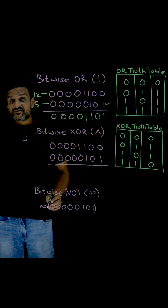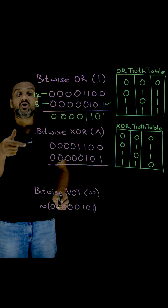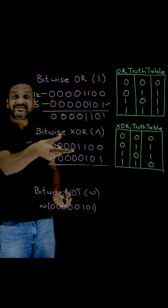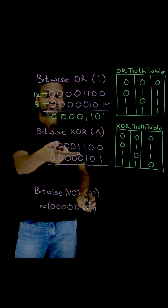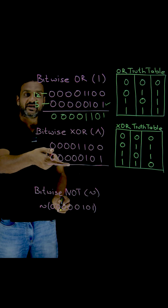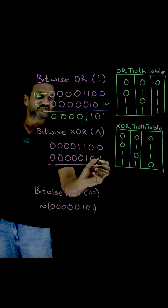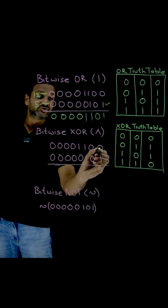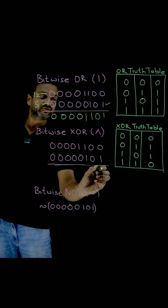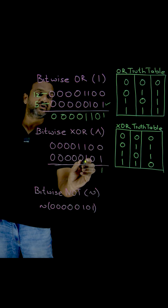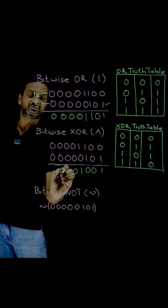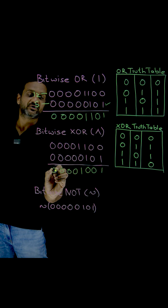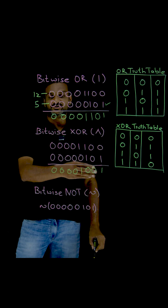This is how the bitwise exclusive OR operation is done. Let's apply that logic on these two numbers, which are 12 and 5. Zero, one — both are different, so we get an outcome of one. Zero, zero — this produces an outcome where four bits are zeros, so we get an outcome of all zeros.